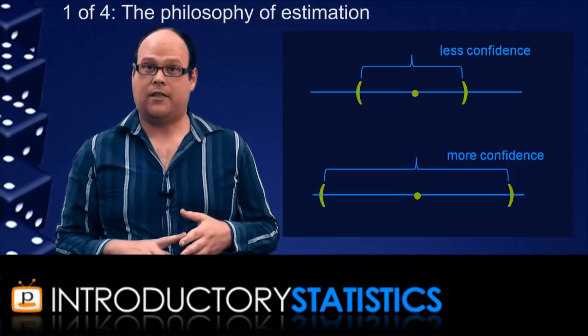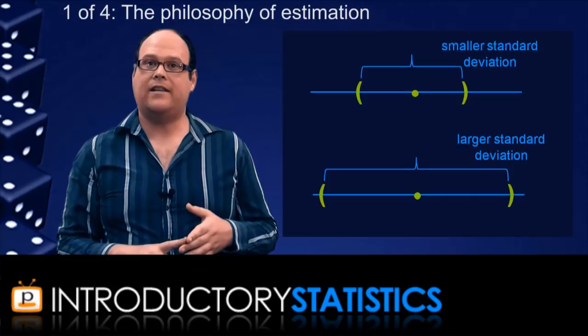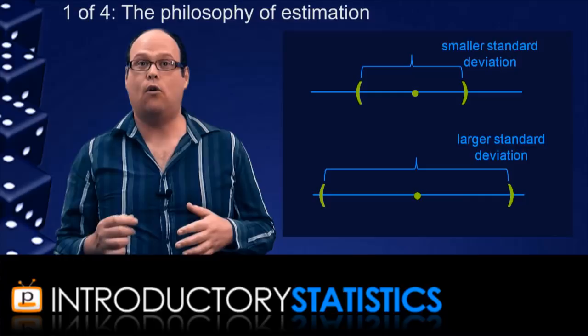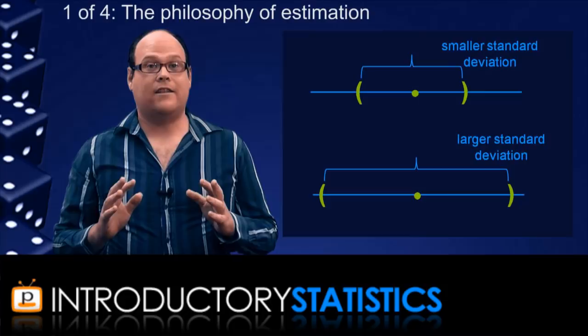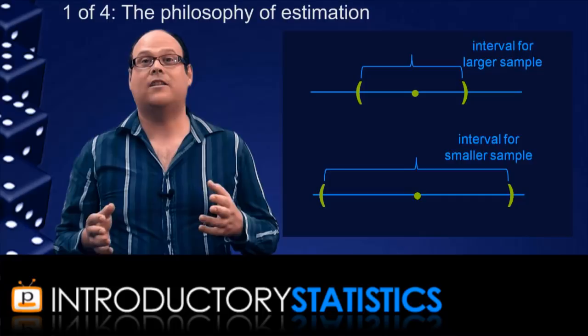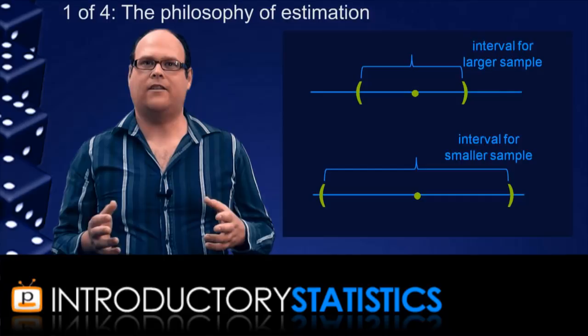First, how confident you want to be in the estimate. The more confident you want to be, the wider you're going to have to make the interval. Secondly, the standard deviation in the underlying population. Big standard deviations mean samples will vary more from the population mean, and so this will cause a wider interval as well. And finally, the size of the sample you collect, because the bigger the sample, the better it will behave, and so you can actually make a smaller interval estimate in that case.